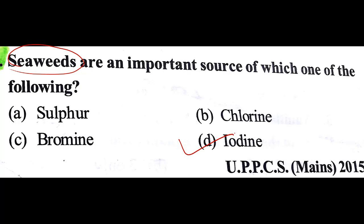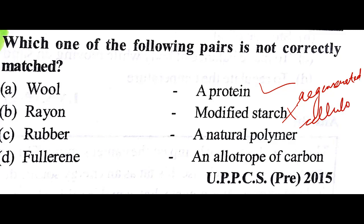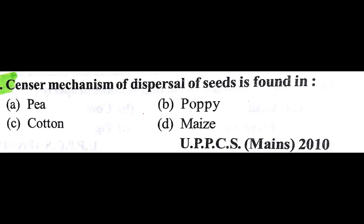Which one of the following pairs is not correctly matched? Wool — a protein: yes, true. Rayon — modified starch: no, rayon is basically regenerated cellulose. So our answer is B. Rubber is a natural polymer: true. Fuller is an allotrope of carbon: true.